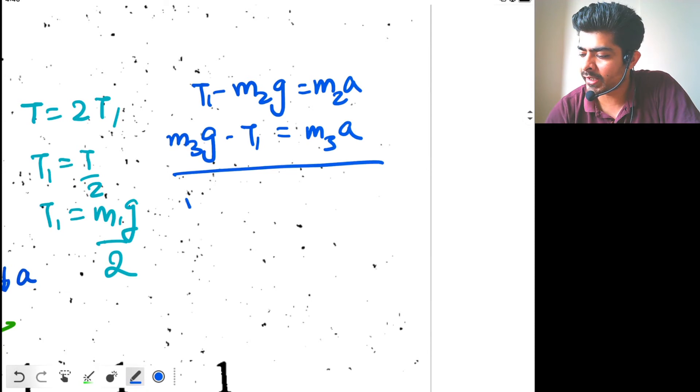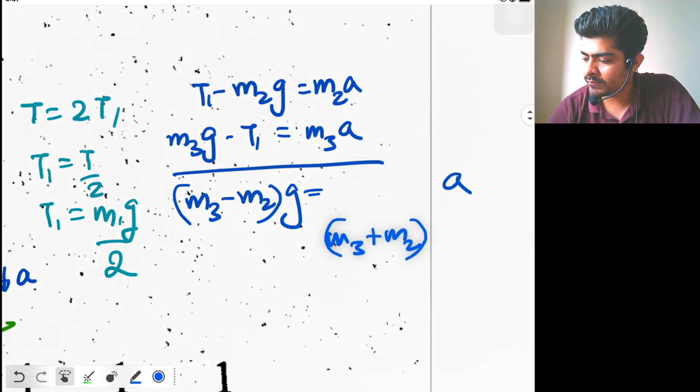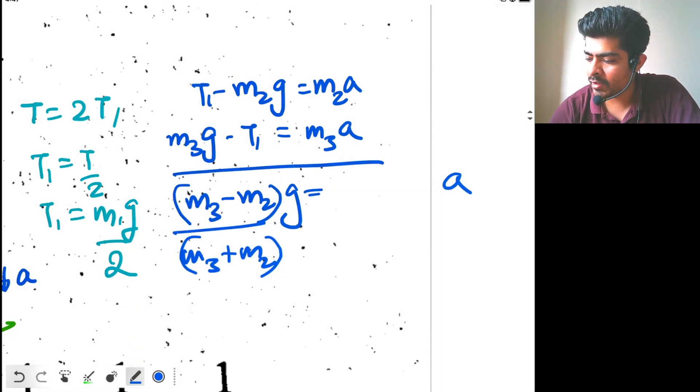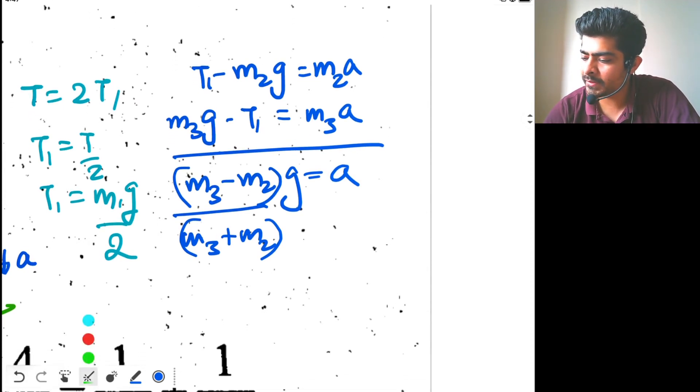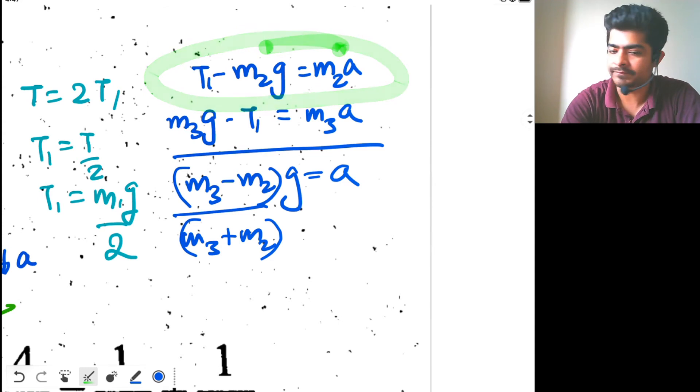If we add them together, we get (m3 minus m2)g equal to (m3 plus m2) multiplied by a. This is my acceleration: a equals (m3 minus m2)g over (m3 plus m2). Now put the value of a back in one of the equations.